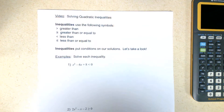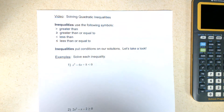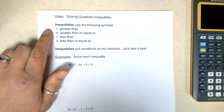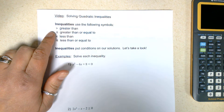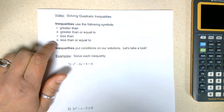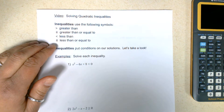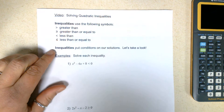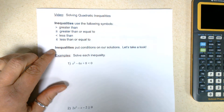Hello, this is Dr. Mears and today we are going to learn how to solve quadratic inequalities. A couple of notes first: inequalities use the following symbols — greater than, greater than or equal to, less than, less than or equal to. So we're going to be switching from the equal sign to these symbols. Also, inequalities put conditions on our solutions, and that's what we're going to take a look at today.